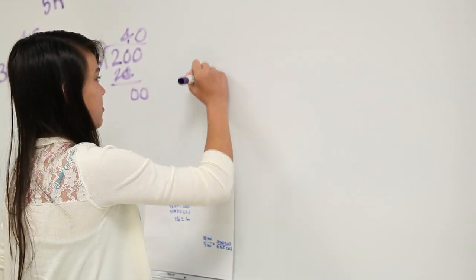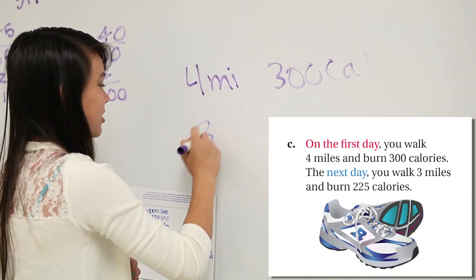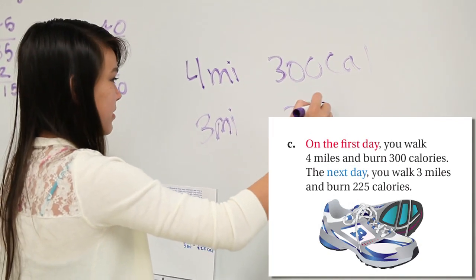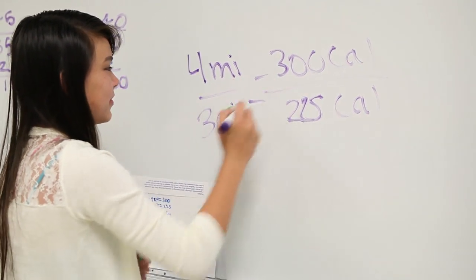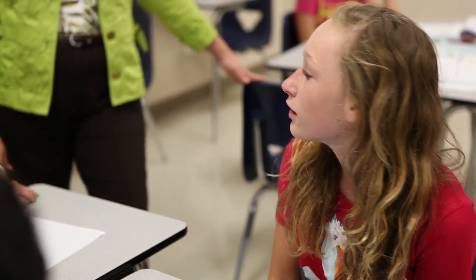Asia, go up to the board and explain your group's proportion. For the first day you walked four miles and burned 300 calories, and for the second day you walked three miles and burned 225 calories. My group found out that for each mile you burn 75 calories. The ratios were equal, so that determined why it was fair.